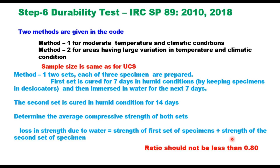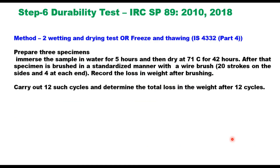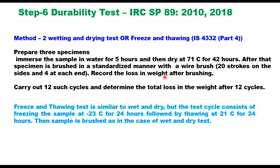Method 2 is the wet and dry test or freeze and thaw test as per IS 4332 Part 4. Prepare three specimens, immerse in water for five hours, then dry at 71°C for 42 hours. After that, brush the specimen with a wire brush using 20 strokes on the sides and four strokes at each end, recording the loss in weight. This constitutes one cycle — carry out 12 such cycles. For the freeze-thaw test, freeze at −23°C for 24 hours then thaw at 21°C for 24 hours per cycle, then brush similarly. In both cases, the total loss in weight after 12 cycles should not exceed 14 percent.